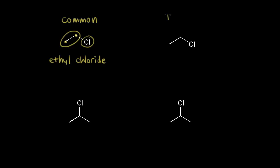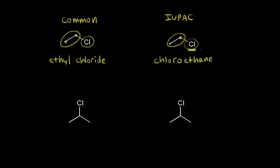Now let's name the same molecule using IUPAC nomenclature. It's going to be named as a haloalkane. For a two-carbon alkane, that would be ethane, so I write in ethane. Our halogen is chlorine, so this would be chloro — so chloroethane is the name. If I had fluorine instead of chlorine, it would be fluoroethane. If I had bromine instead, it would be bromoethane. And finally, if I had iodine instead, it would be iodoethane.